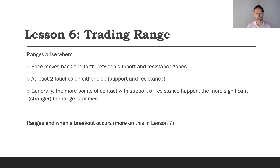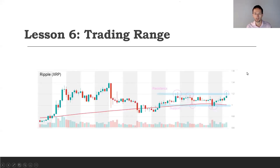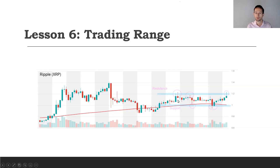To identify the range, we look for support and resistance levels, and to do that we need at least two touches on either side. Let's look at this graph of Ripple XRP — as of yesterday, it's clearly in a range. It doesn't take a rocket scientist to see the price is moving sideways. This is a daily chart, so we're talking about roughly a month's worth of data.